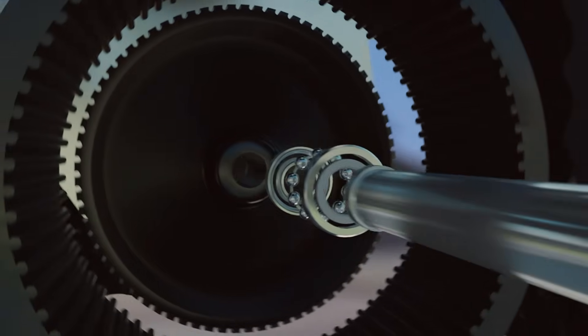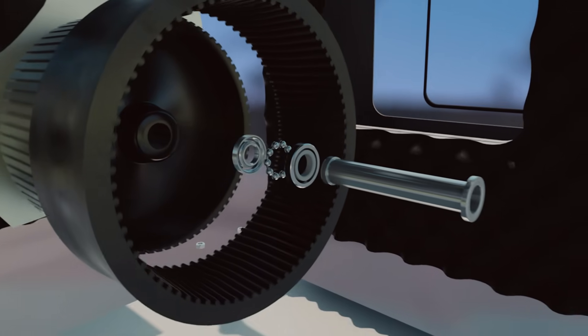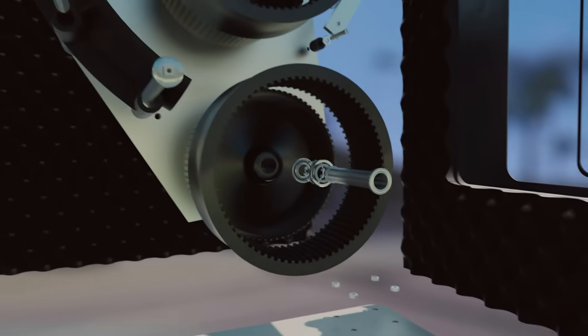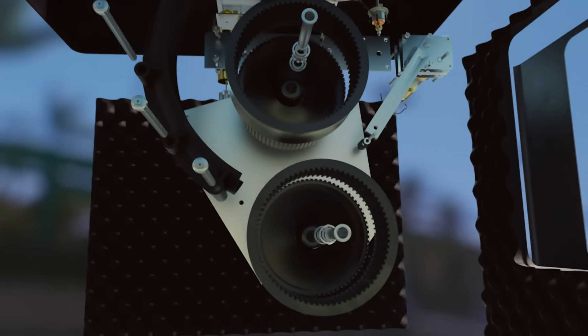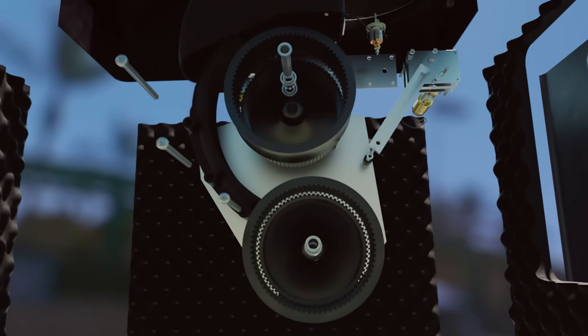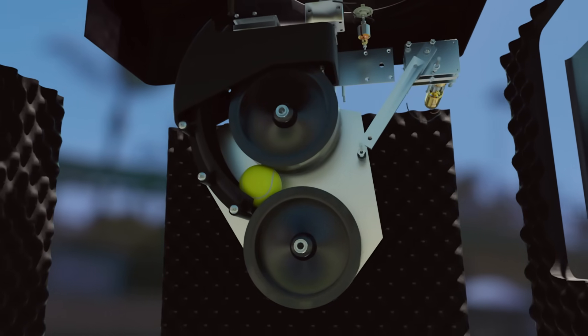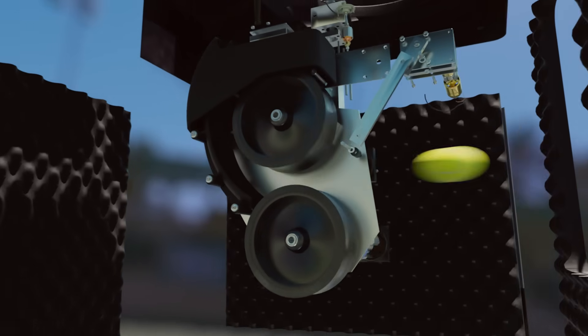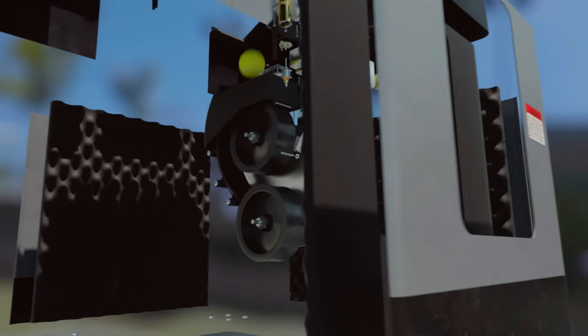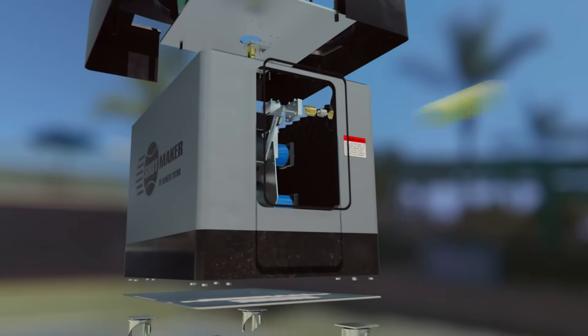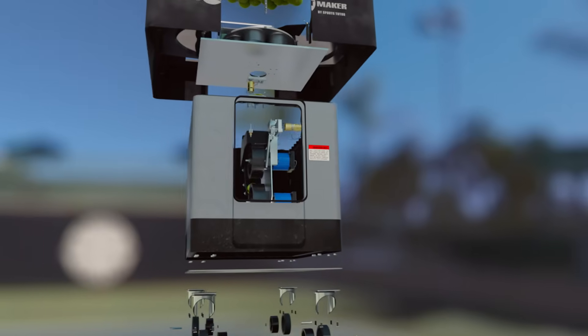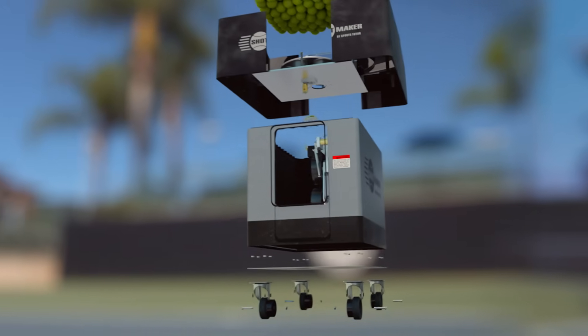High-speed bearings help them spin faster than the rotor on a helicopter. A banana-shaped ramp feeds in the balls. They squash down to half their normal size and shoot out faster than a freight train. This machine will run you ragged without ever breaking a sweat.